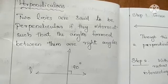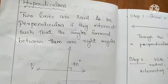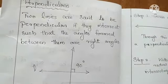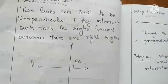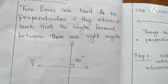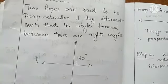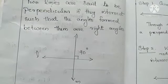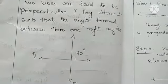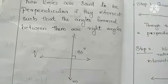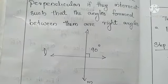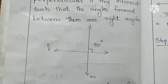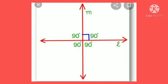The next topic is Perpendiculars. We have already discussed perpendiculars in a previous chapter on Geometry. Two lines are said to be perpendicular if they intersect such that the angles formed between them are right angles — that means 90 degrees. Here you can see two lines L and M; the angle between them is 90 degrees, so L and M are perpendicular to each other. All the angles between them are 90 degrees.